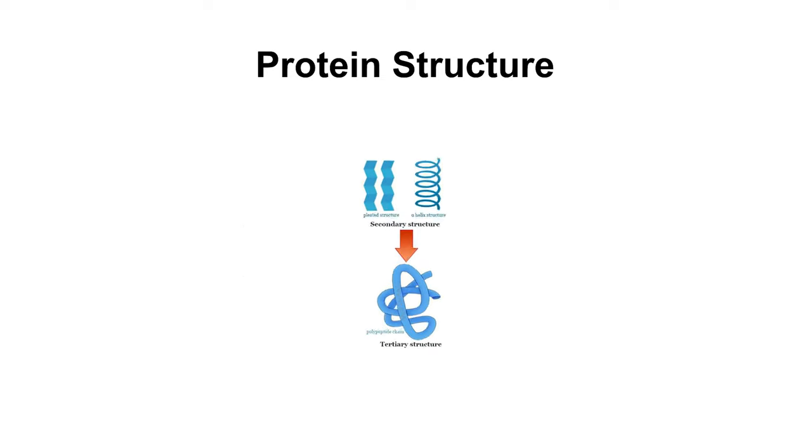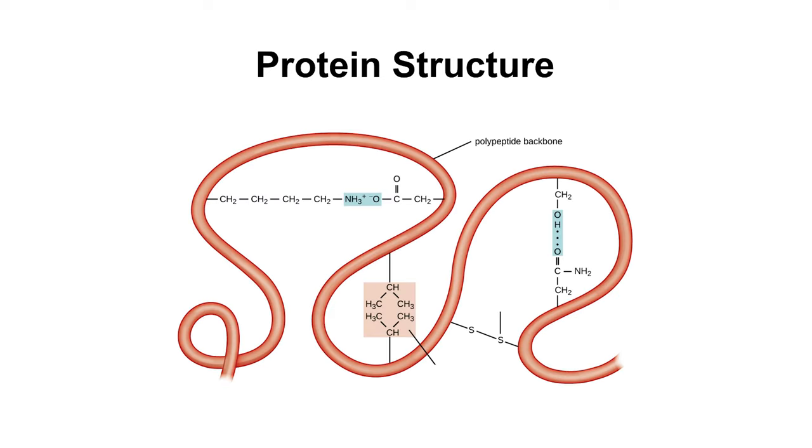Then we have tertiary structure. The tertiary structure of proteins represents the overall folding of the polypeptide chains, further folding of the secondary structure. Tertiary structure is primarily due to the interactions between the R-groups of the amino acids that make up the protein.